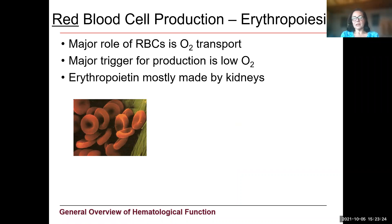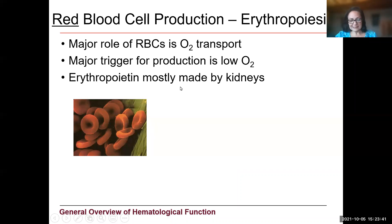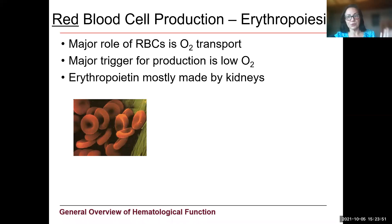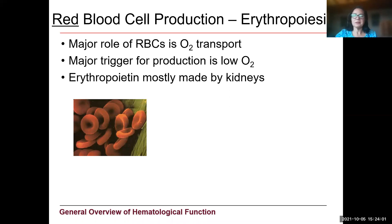The major trigger for producing more red blood cells is having low levels of oxygen in the blood. The trigger for making more red blood cells is a hormone given the name erythropoietin because it triggers making red blood cells. Here's the interesting part — it's mostly made in the kidneys, with a little bit made in the liver. We count on the kidneys to detect oxygen levels and produce this hormone at appropriate times. So patients who have kidney disorders may be low on red blood cells because their kidneys aren't producing adequate amounts of erythropoietin.